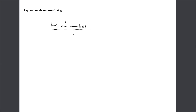The amplitude depends on how much we stretched it in the first place — the more we stretch it, the bigger it will move back and forth, and the bigger the velocity as it goes through the origin. The frequency of oscillation omega is actually an angular frequency. This is 2π times a linear frequency f, which is the number of cycles per second, and that equals the square root of k divided by m.